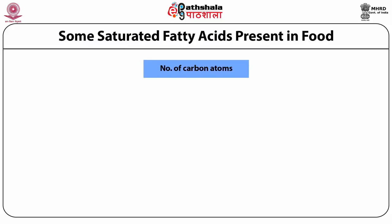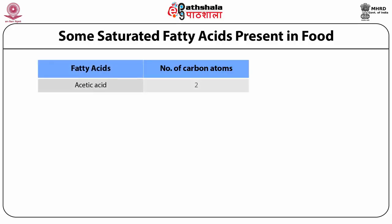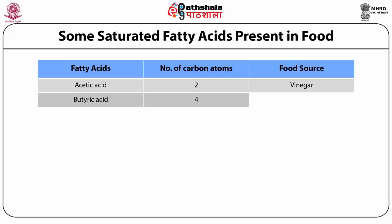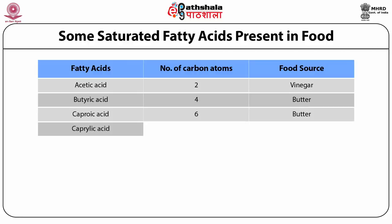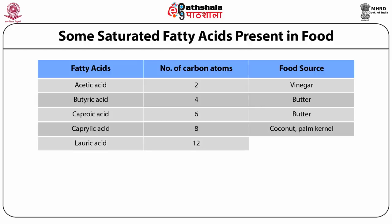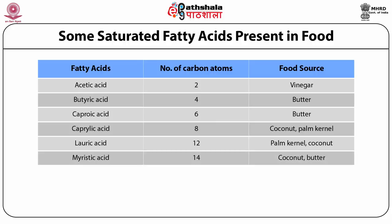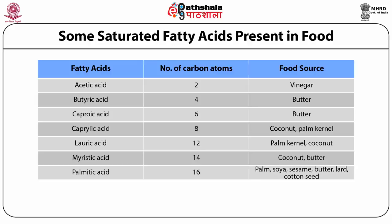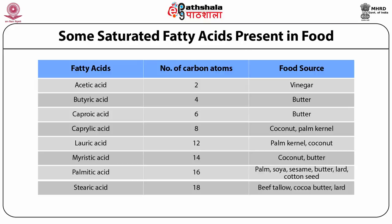Here is a complete table showing some saturated fatty acids generally present in food. Acetic acid has two carbon atoms; food source is vinegar. Butyric acid has four carbon atoms; example is butter. Caproic acid has six carbon atoms; food source is butter. Caprylic acid has eight carbon atoms; examples are coconut and palm kernel. Lauric acid has 12 carbon atoms; sources are palm kernel and coconut. Myristic acid has 14 carbon atoms; sources are coconut and butter. Palmitic acid has 16 carbon atoms; sources are palm, soya, sesame, butter, lard and cottonseed oils. Stearic acid has 18 carbon atoms; found in beef tallow, cocoa butter and lard.